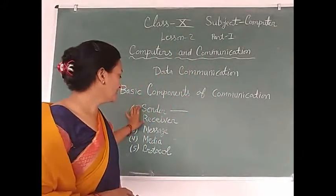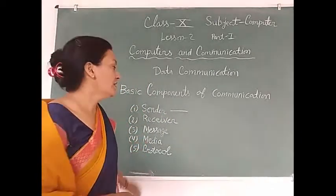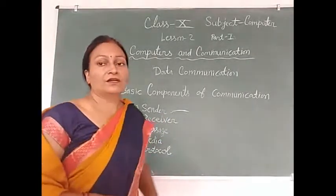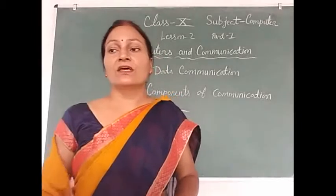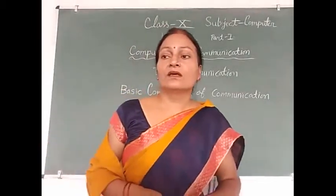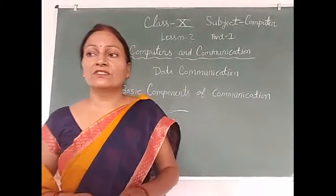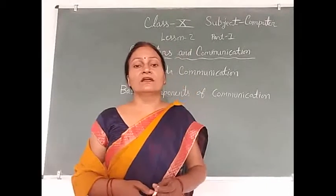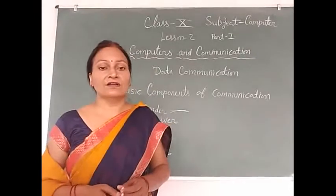There are five basic components of data communication. These are: sender, receiver, message, media, and protocol. Sender is the originator who sends the message. Sender is an electronic device which is responsible for sending information — that is telephone, computer, mobile, etc. All are senders.